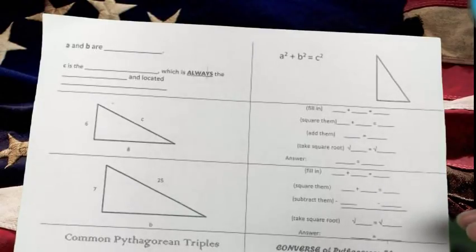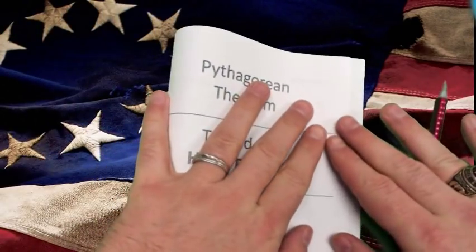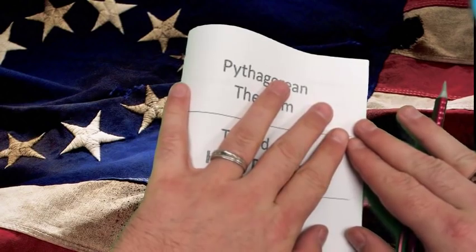Alright, Patriots, let's go ahead and get started on our next lesson, 8-2, Pythagorean Theorem and its Converse. Go ahead and take that notes there, and let's go ahead and fold it in half.